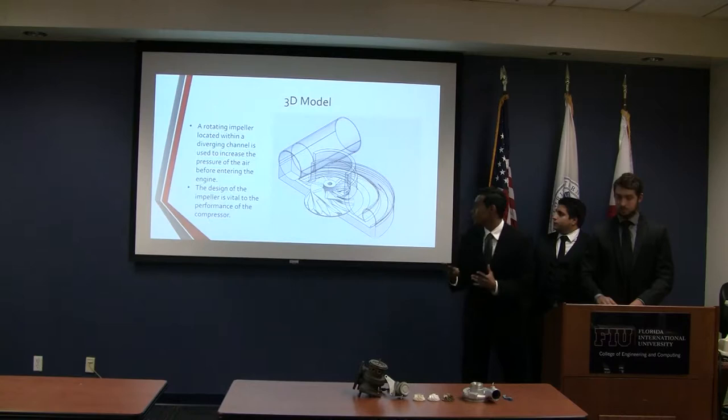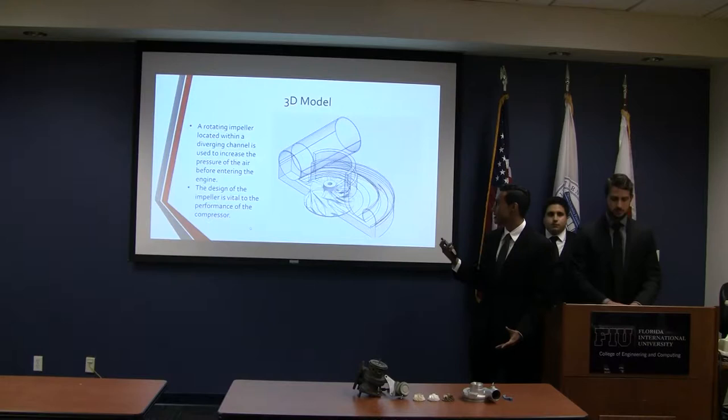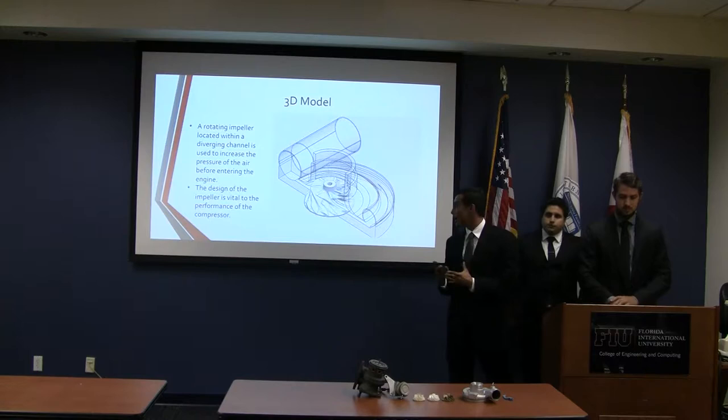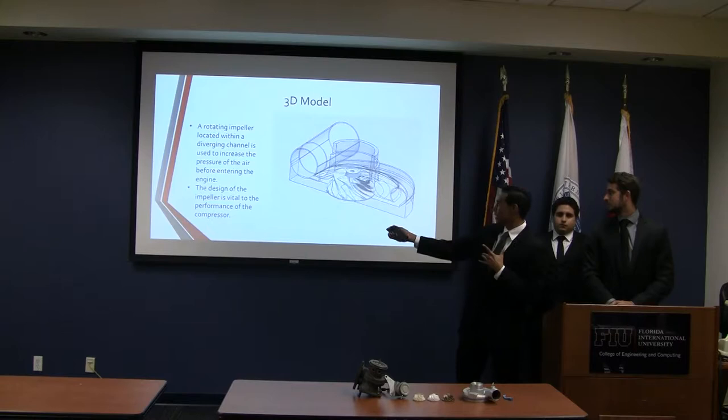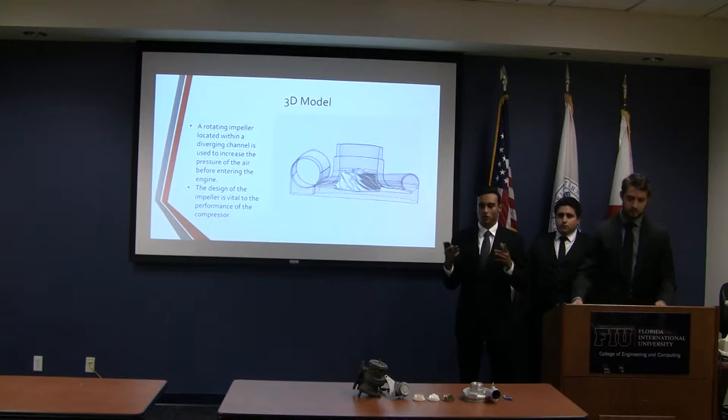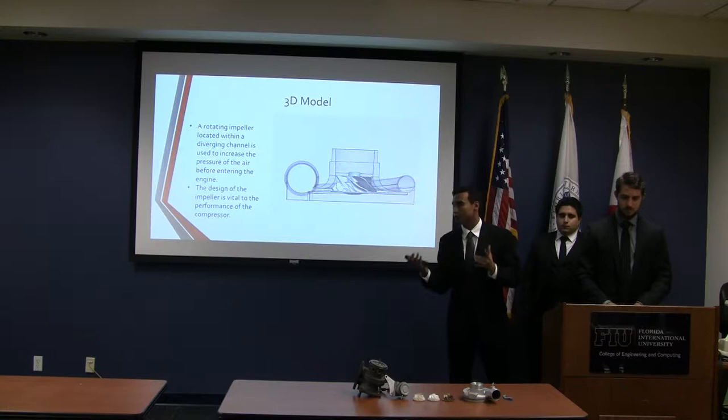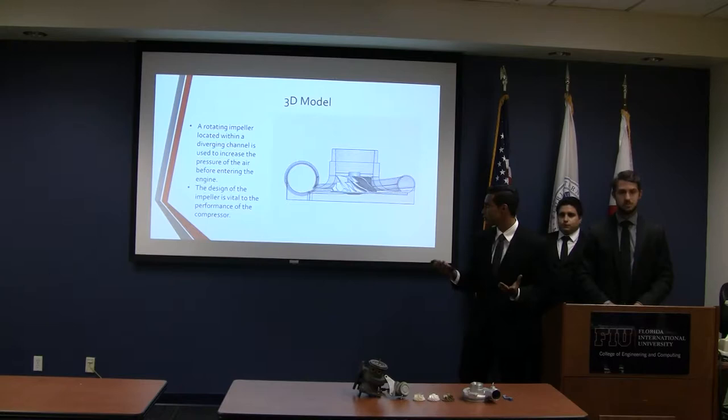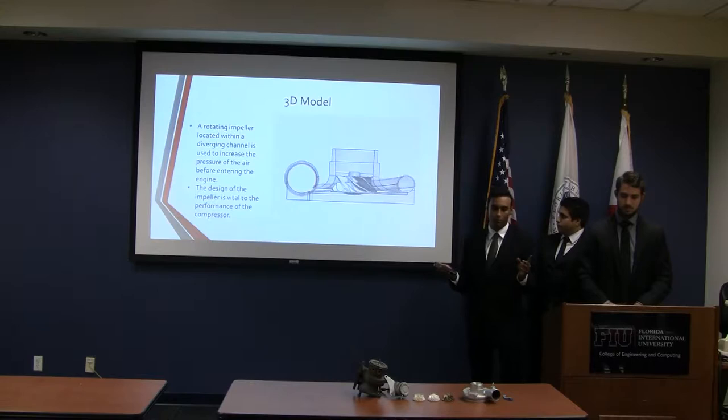Here we have a 3D model of what we created. This project was very CAD-intensive. The rotating impeller adds velocity to the air as it comes in. As velocity increases, we have lower pressure. The diverging channel — which looks like a snail — changes this high-velocity, low-pressure region into a low-velocity, high-pressure region. The design of the impeller is the most important aspect, and the gap between the housing and compressor wheel must be very small.